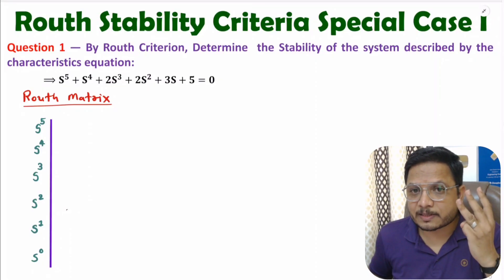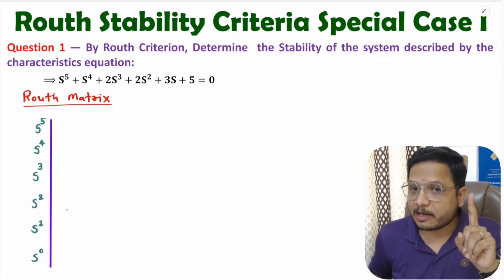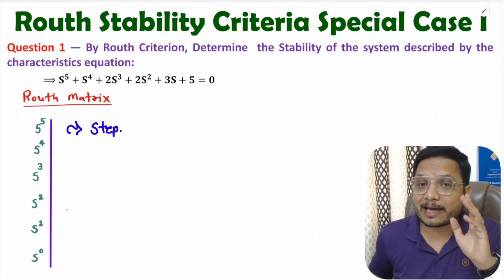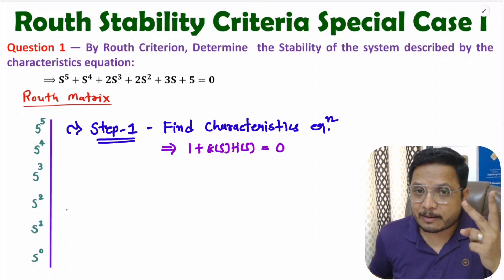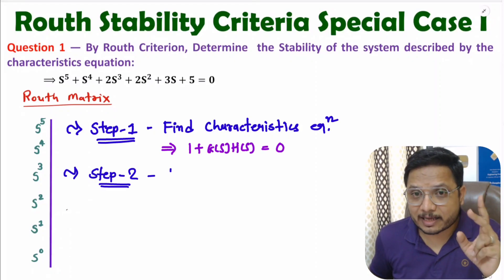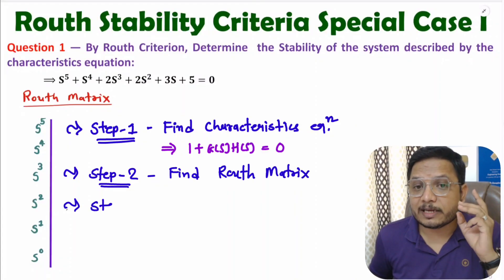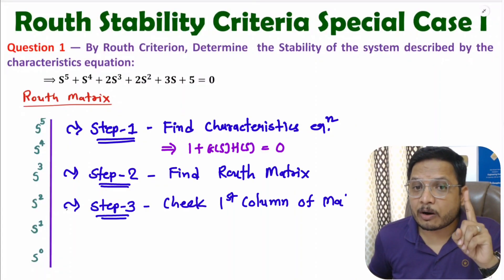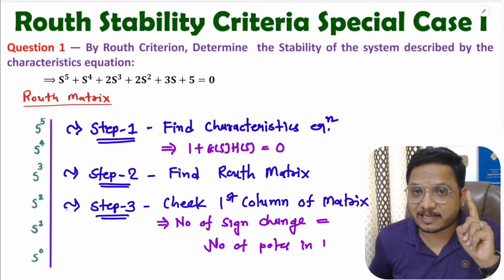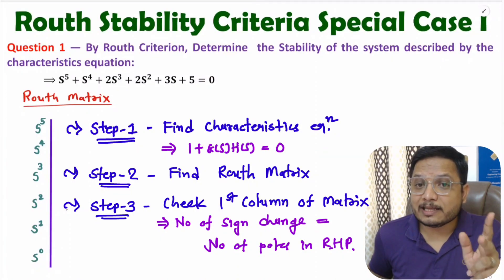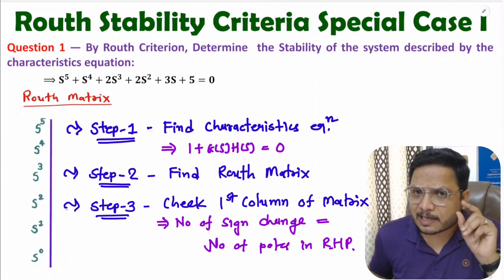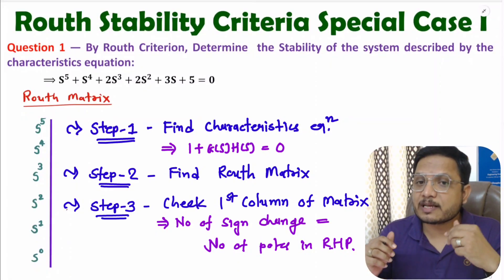There are three simple steps we need to follow to identify stability using Routh criteria. In the first step, we need to identify the characteristic equation, that is 1 plus G(s)H(s). In the second step, we need to identify the Routh matrix. In the third step, we need to check the first column of the Routh matrix and identify the number of sign changes. Number of sign changes equals the number of poles in RHP. If any single pole is in RHP, the system becomes unstable.